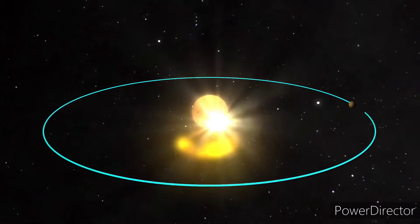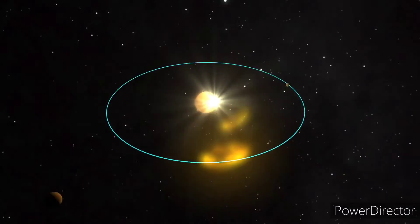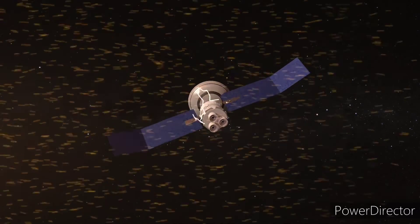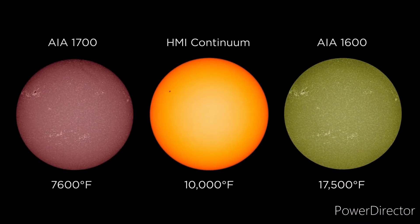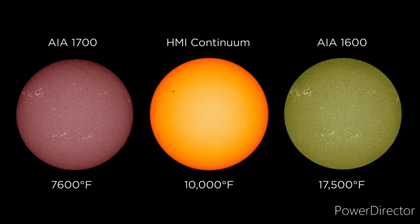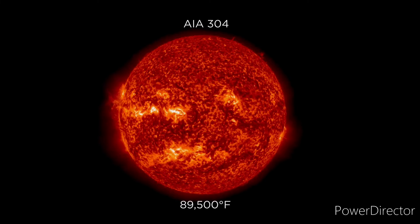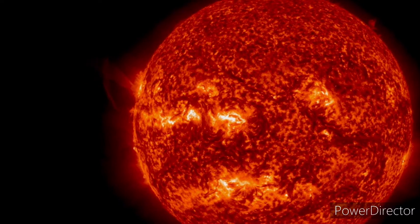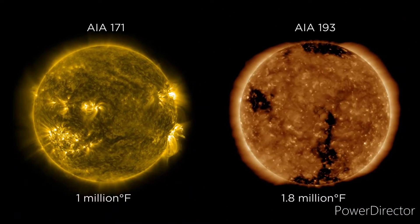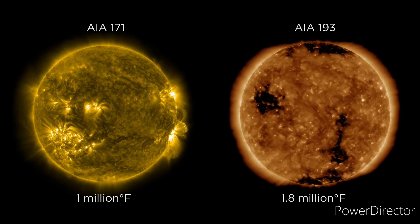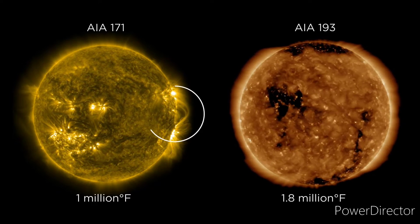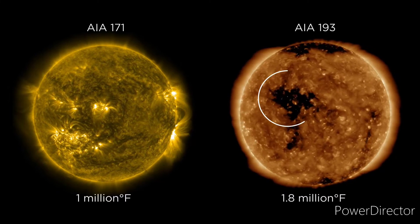These wavelengths show us the sun's upper atmospheric layers at different temperatures. These wavelengths highlight filaments and prominences. These wavelengths highlight the corona — the sun's atmosphere that is much hotter than the sun's surface — and show features like coronal loops and coronal holes.